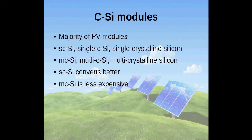The majority of PV modules are based on crystalline silicon due to abundant resources. There are two main forms of CSI: